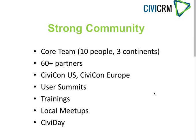There is a strong community around CiviCRM. The core team has ten people located in three different continents — United States, Europe, and India. Around the core team, there are more than 60 partners, including service providers, implementers, web developers who provide services or create new extensions for CiviCRM. There are also technology partners such as PayPal as a payment processor. This community is very active not only through the internet but also with live events.